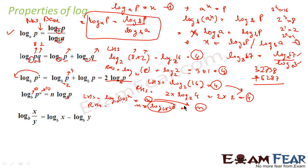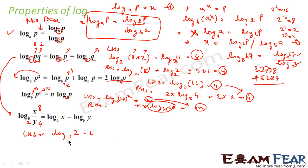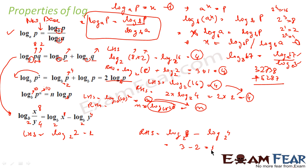One more property — this is just the opposite of the multiplication property. In multiplication we add; in division we subtract. Taking x as 8, y as 4, and base b as 2: LHS is log of 8 divided by 4, which is log 2 to the base 2, equals 1. RHS is log 8 to the base 2 minus log 4 to the base 2, which is 3 minus 2, equals 1. Both sides are same.